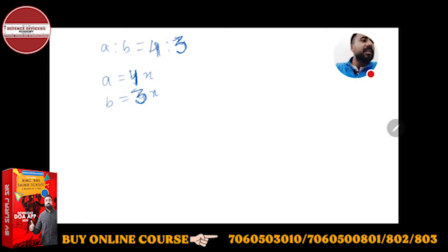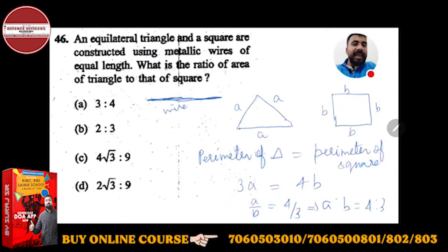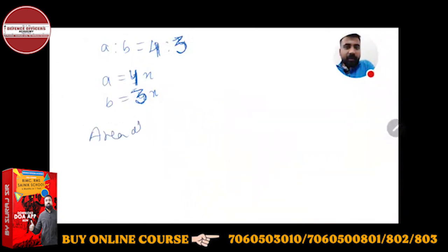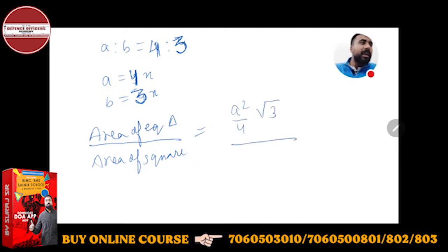Now what you have to calculate is the ratio of area: area of equilateral triangle upon area of square. What is the area of equilateral triangle? a squared upon 4 root 3. And what is the area of square? Side squared, which is b squared. Just put the values: a is 4x, so 4x whole squared upon 4 root 3, upon b squared which is 3x whole squared.